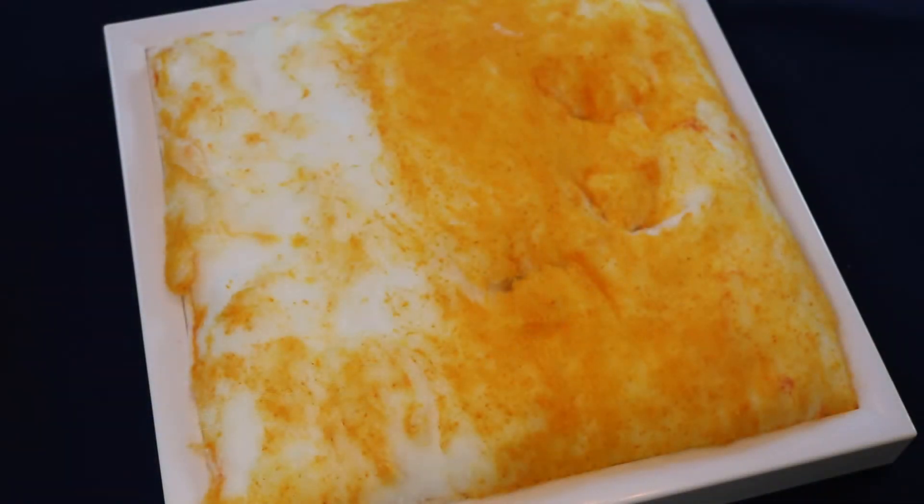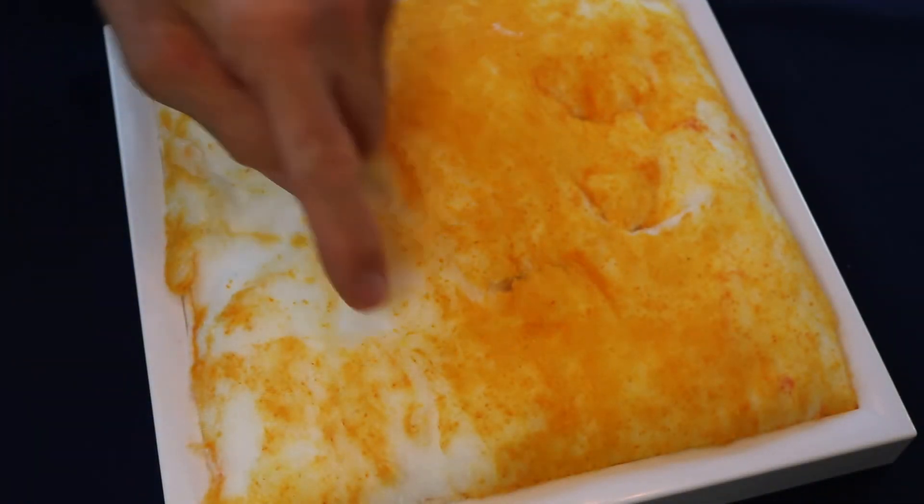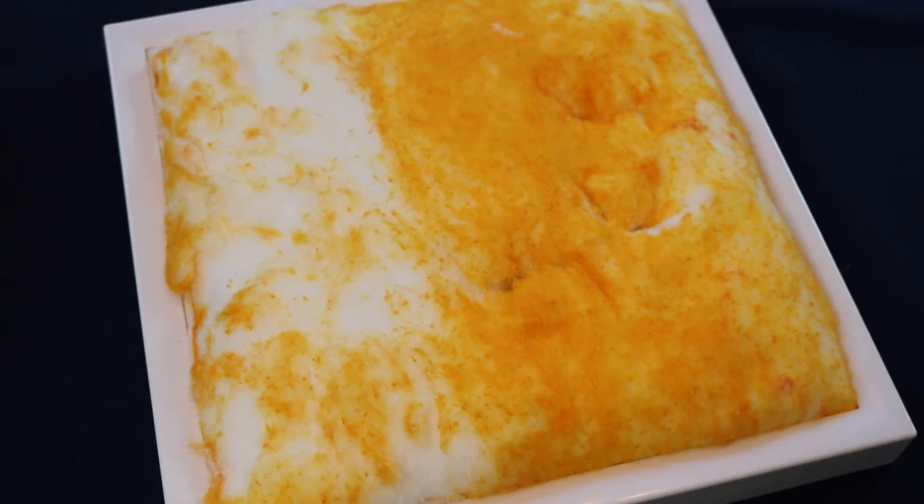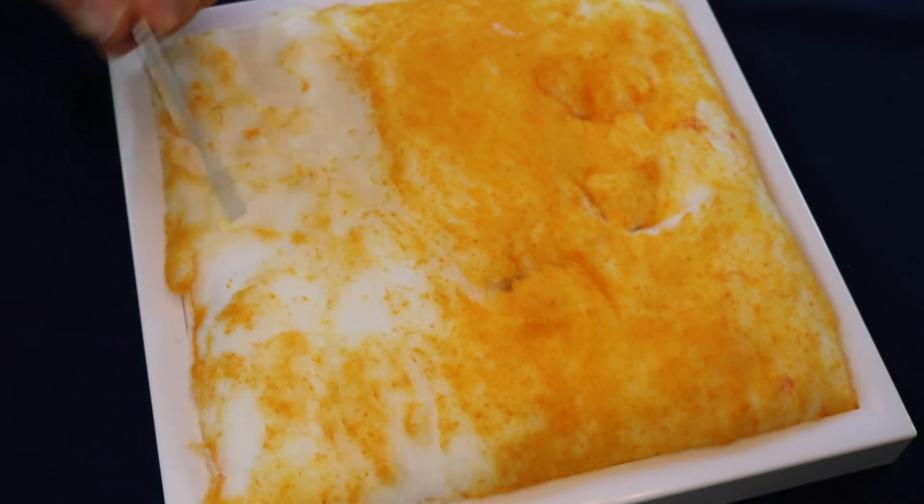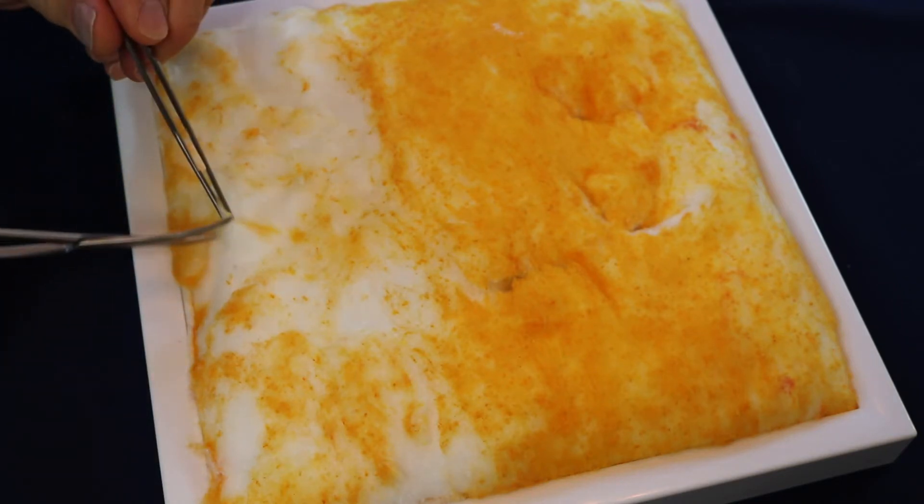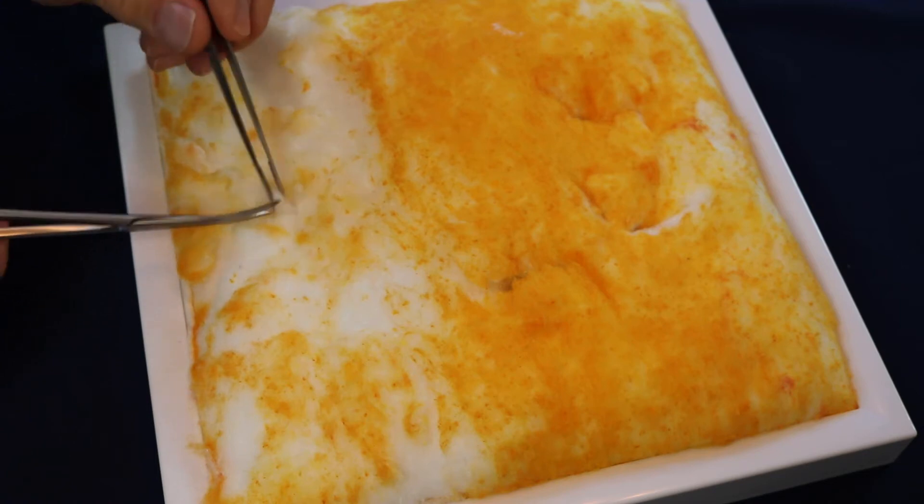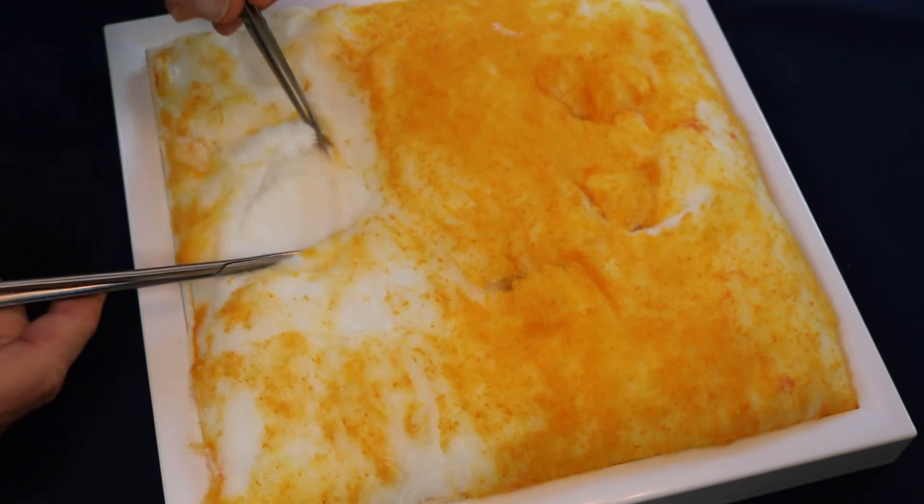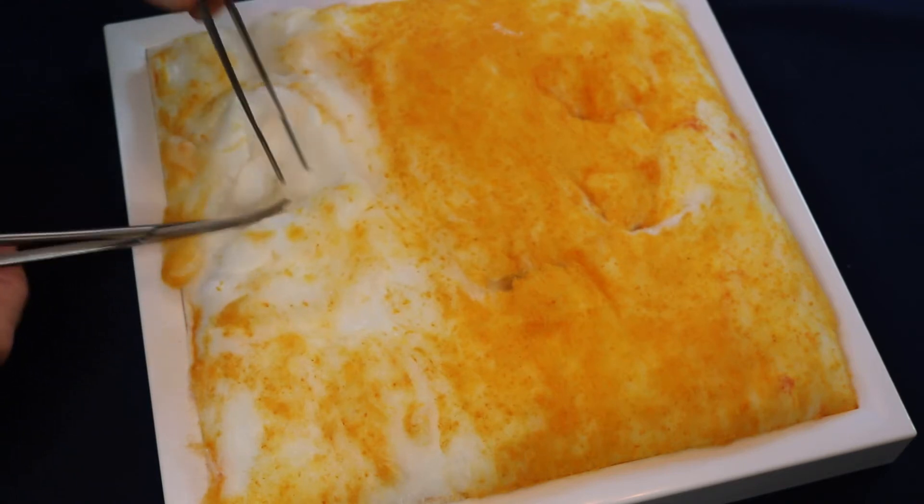Once all of the masses have been excised, proceed to the removal of the two simulated veins. First of all, you have to find them, and this is probably best done with a vertical exploratory incision over the middle of the lower board. As you dissect down, you will see the blue structures buried deep within the simulated fat. Very carefully expose the upper surface of the vein.